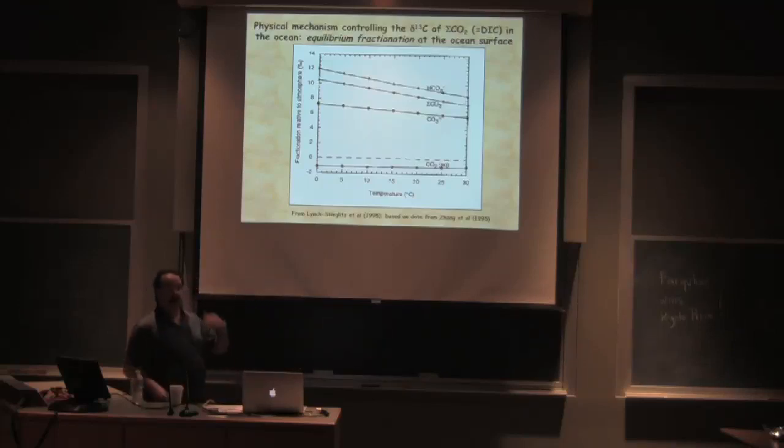The three forms combined give you something on the order of about an 11 per mil fractionation between the atmosphere and the ocean. The ocean has a delta C-13 that's enriched in C-13 relative to the atmosphere, and as you get up to tropical temperatures, that fractionation drops off.